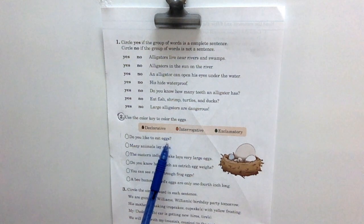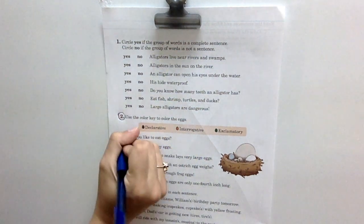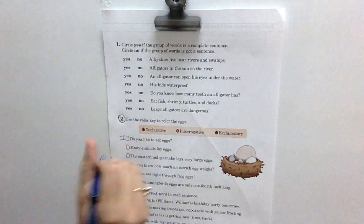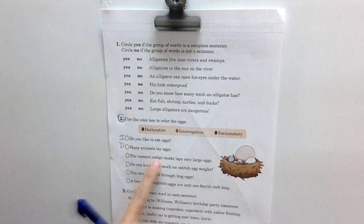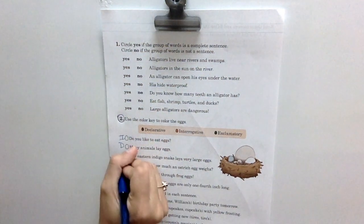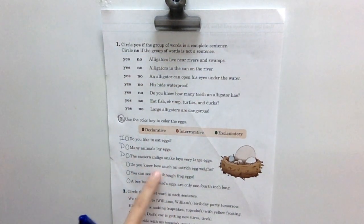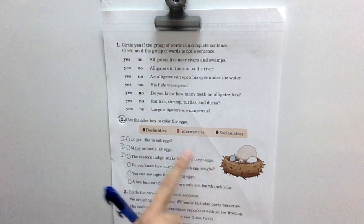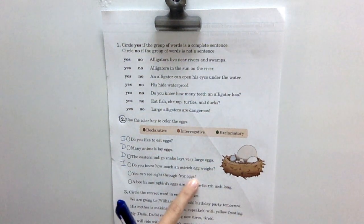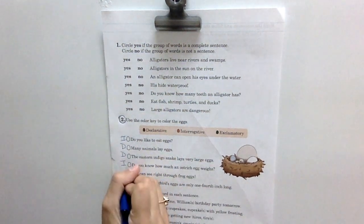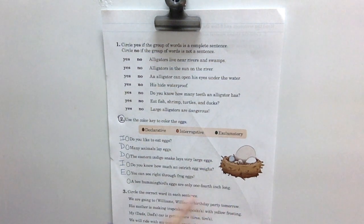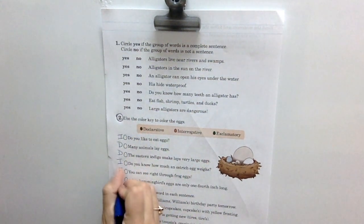Do you like to eat eggs? That would be interrogative. So I'm just going to put an I right there because I don't have colors. Many animals lay eggs. It's just a statement, so it's declarative. The eastern indigo snake lays very large eggs. Another declarative. It's just a statement. It's just telling you something. Do you know how much an ostrich egg weighs? There's a question mark, so it must be interrogative. You can see right through frog eggs. Look at that at the end. It's an exclamation point, so it's exclamatory. So we're going to do E. A bee hummingbird's eggs are only one-fourth inch long. Another declarative sentence. It's just a statement. So a D. Okay. Very good review on that, boys and girls.